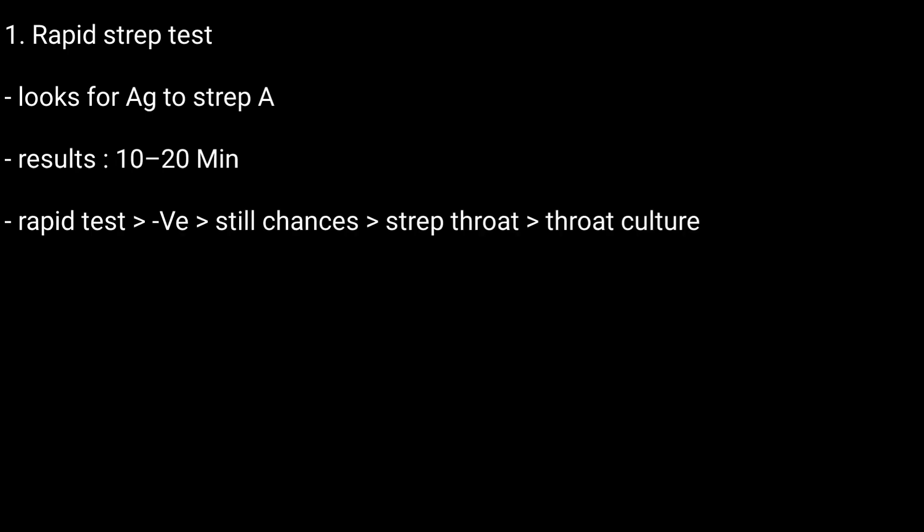There are two types of Strep A tests. The first is the rapid strep test. This test looks for antigens to Strep A and can provide results in 10 to 20 minutes. If a rapid test is negative but your provider still thinks you have strep throat, they may order a throat culture.